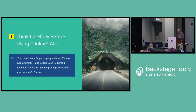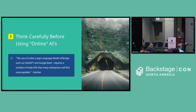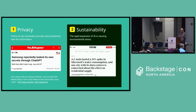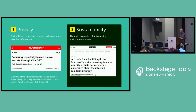But it's not all plain sailing — there are some risks as well. You should definitely think carefully before using online generative AIs. This is what Gartner said: the use of online large language models such as ChatGPT and Google Bard requires a number of trade-offs that many organizations will find unacceptable. For example, privacy is a problem. Samsung found this when their employees started to use ChatGPT — they accidentally leaked information about upcoming chip manufacturing techniques because ChatGPT does not forget the prompts that you give it.